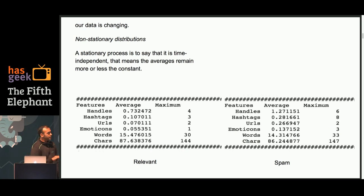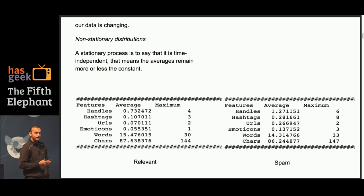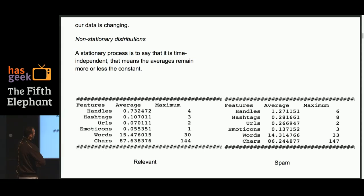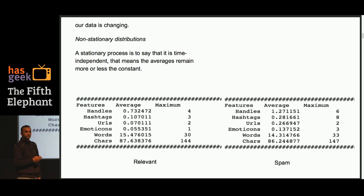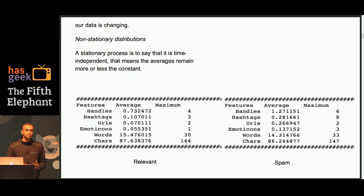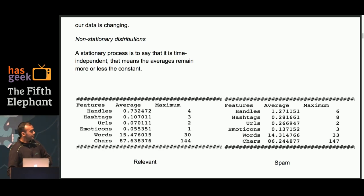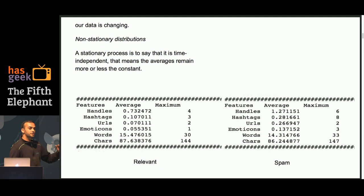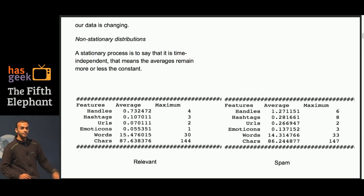Here I put the data into two different classes — spam versus not spam — and how the averages themselves sometimes differ by a factor of two between the two classes. This helps generalize the problem from a modeling perspective, but there is an inherent non-stationary distribution flowing within each class as well.